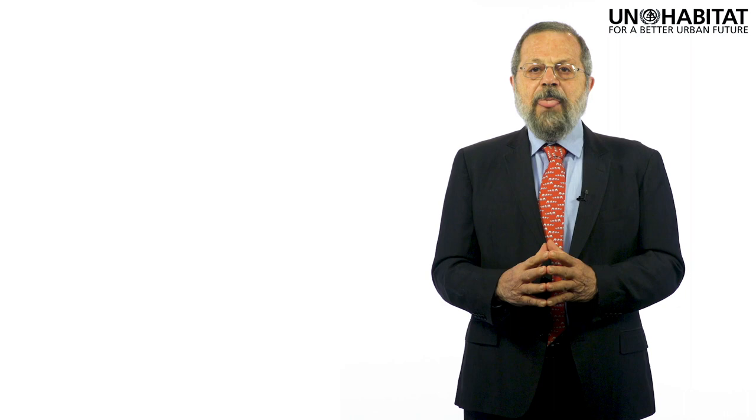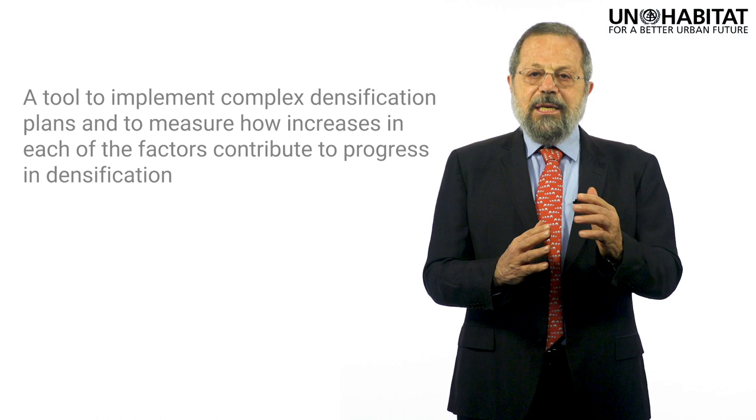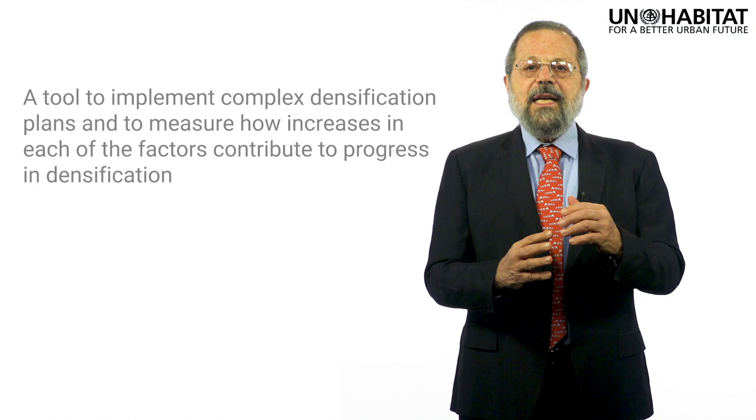To conclude, we can decompose urban density into measurable factors that allow us to explore its anatomy, understand how different cities acquire their density in different ways — something we could not see by simply looking at variations in urban density. Decomposing urban density into its factors also allows us to design comprehensive urban densification strategies that look at all possible ways to increase urban density in a systematic way. The anatomy of density thus provides urban planners and policy makers with a tool to implement complex densification plans and measure how increases in each factor contribute to progress in densification, now a key goal in our global urban agenda.